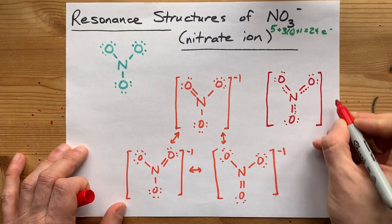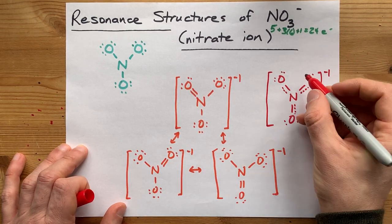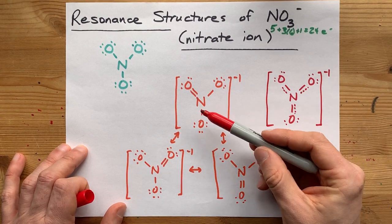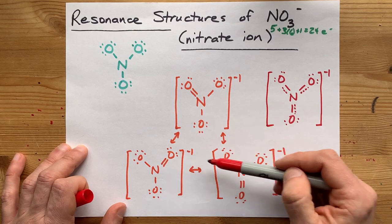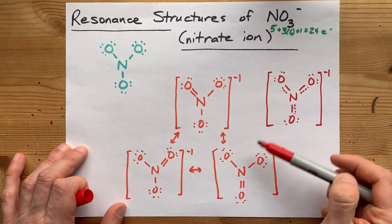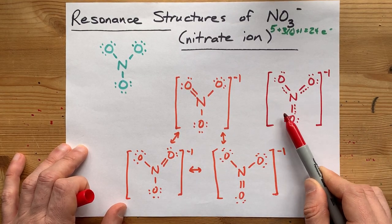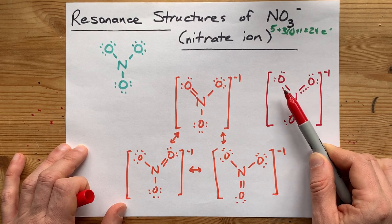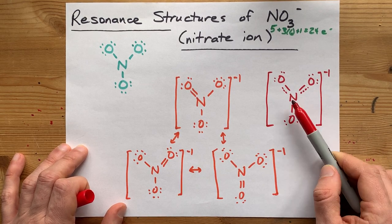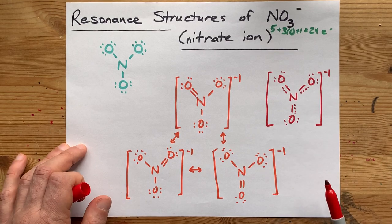If you're being asked to draw the resonance structures, you don't want to draw this. You want to draw all three of these separately because you're probably getting marked on the fact that you know what these three are. I'm just saying that in the real world, you can draw it this way because it demonstrates that you know there are partial bonds between each of the nitrogens and oxygens.